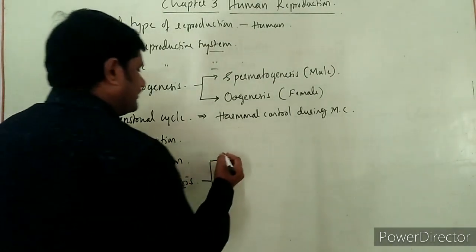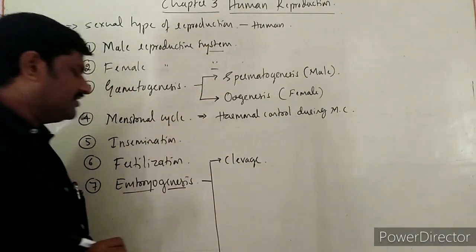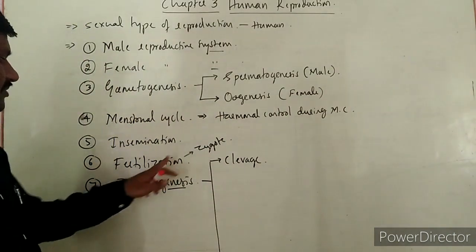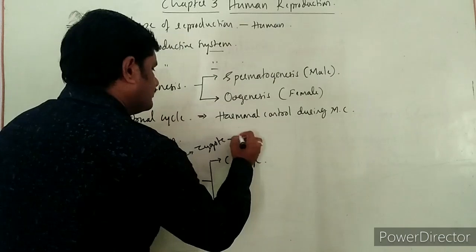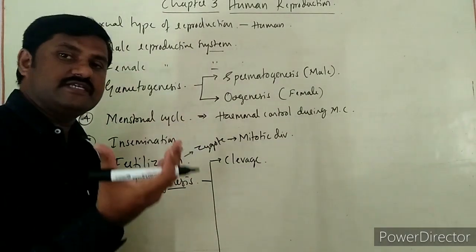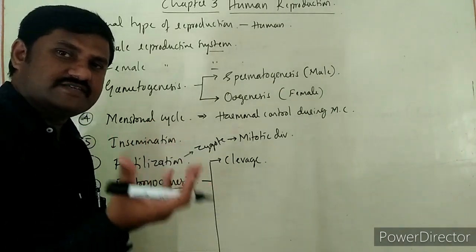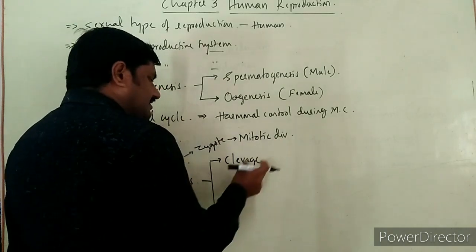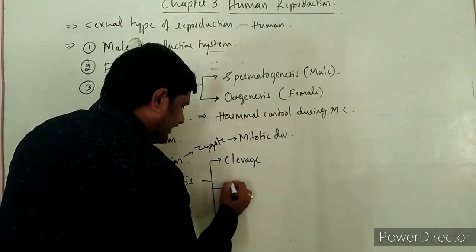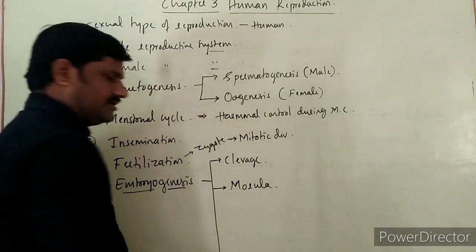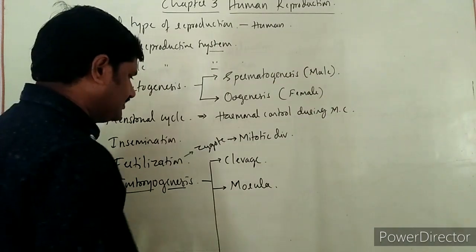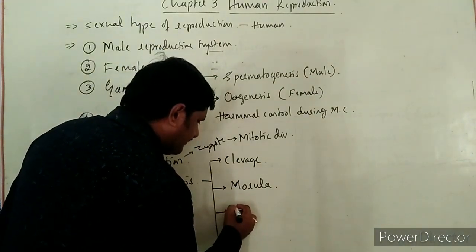I am going to write these developmental stages in detail. After cleavage, a group of 8 to 16 or 16 to 32 cell stages forms, which is called Morula. After the morula, the next developmental stage is Blastula. The process of formation of blastula is called blastulation, and the process of formation of gastrula is called Gastrulation. This is how the developmental stages occur during embryogenesis.